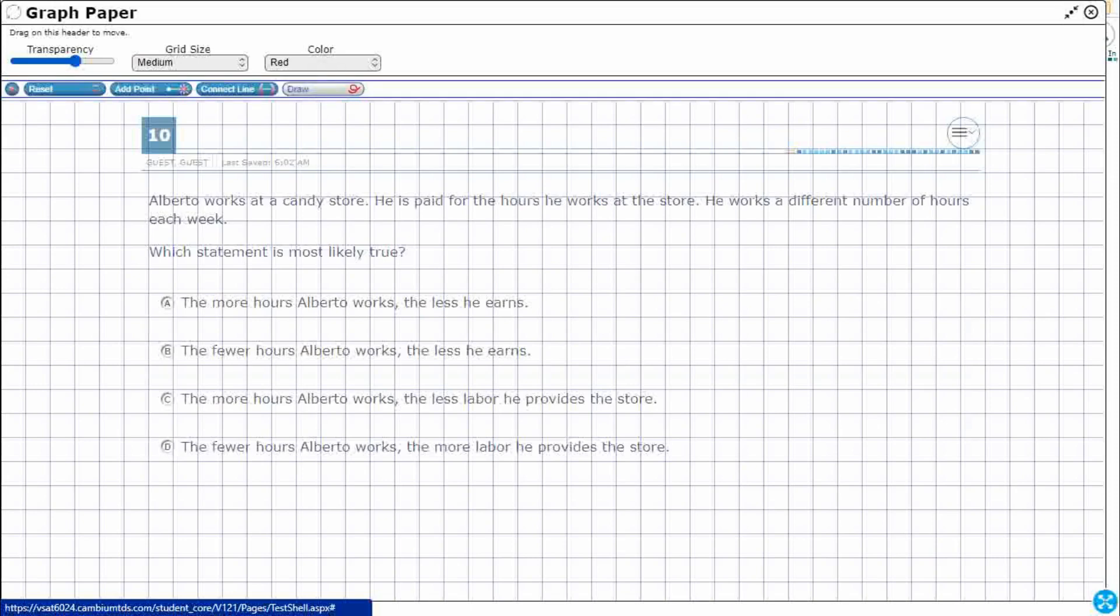So let's read the problem. Alberto works at a candy store. He's paid for the hours he works at the store, that makes sense. He gets money for every hour that he works. Most jobs when you first start out you get paid by the hour. Then he works a different number of hours each week. Which statement is most likely true?